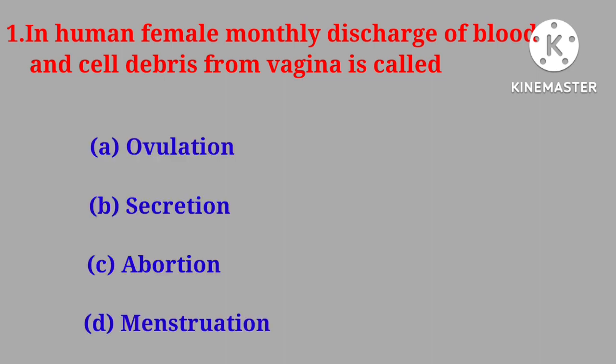Question No. 1: In human female, monthly discharge of blood and cell debris from vagina is called: ovulation, secretion, aberration, or menstruation. Correct answer is menstruation.